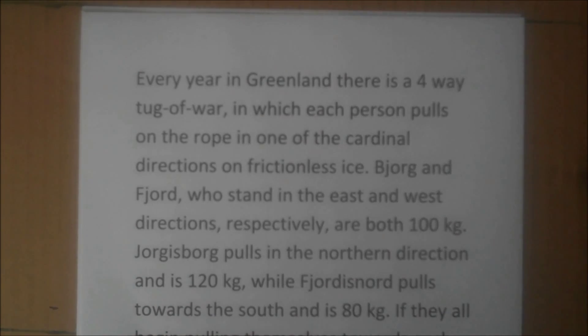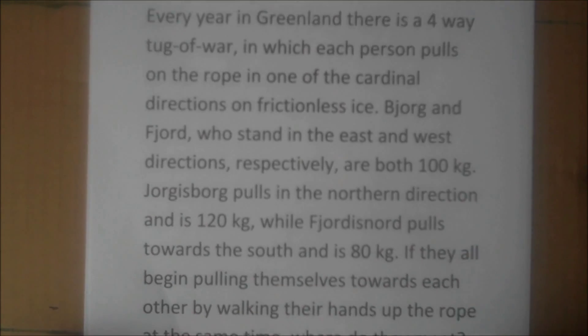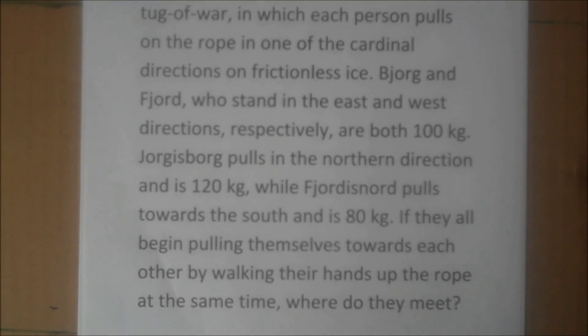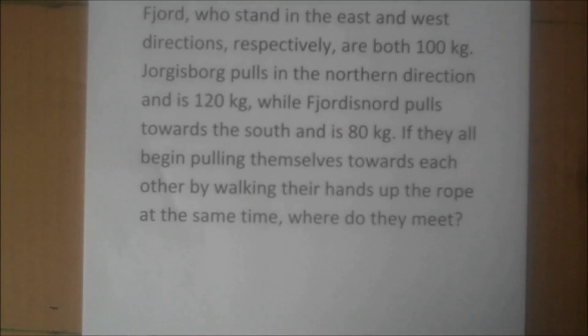Every year in Greenland, there is a four-way tug-of-war in which each person pulls on the rope in one of the four cardinal directions on frictionless ice. Bjorg and Fjord, who stand in the east and west directions respectively, are both 100 kilograms. Jörgisborg pulls in the northern direction and is 120 kilograms, while Fjordis Nord pulls towards the south and is 80 kilograms. If they all begin pulling themselves towards each other by walking their hands up the rope at the same time, where do they meet?